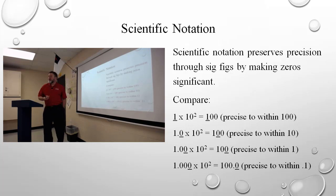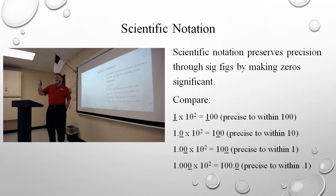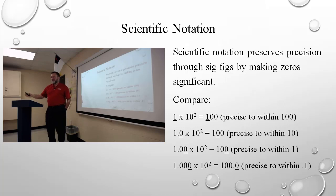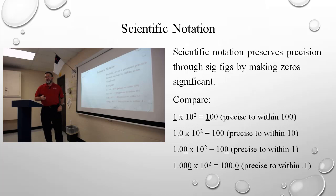Sometimes you do get something which is exactly measured out and the final position is a zero. And if you write it out, it appears as if that last zero is insignificant. We maintain the significance of the zeros by using scientific notation.